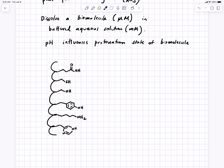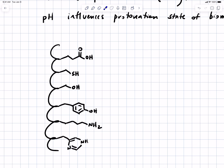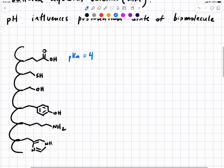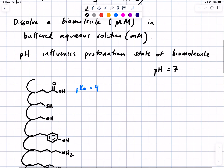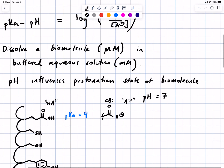Some groups have both. For example, this group is a carboxylic acid. If I were to look up the pKa in a table — and you should practice that — I would find that the pKa of this group is 4. Suppose the problem tells me that pH equals 7. Let's draw the conjugate base of this group. We can see the conjugate base would be negatively charged. This is HA, this is A minus. Which form dominates at pH 7?